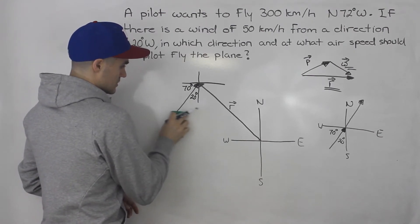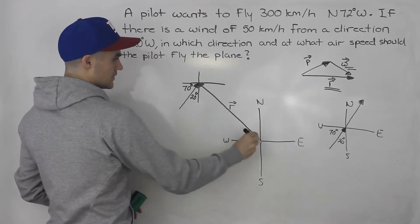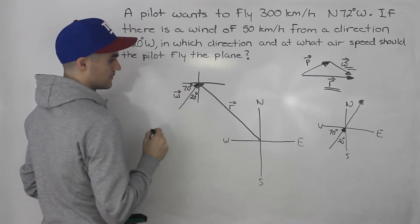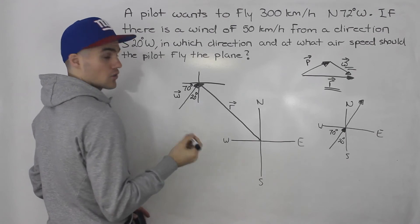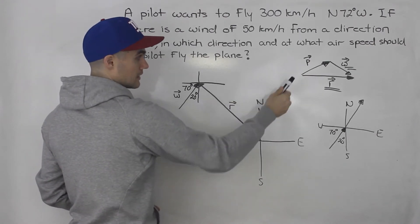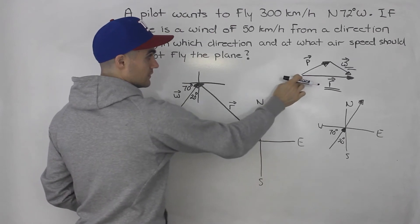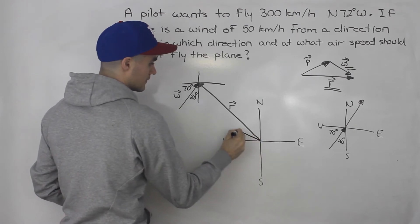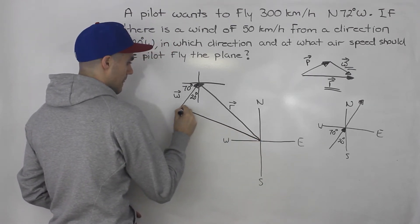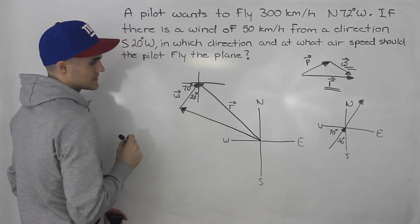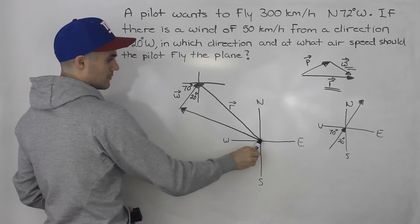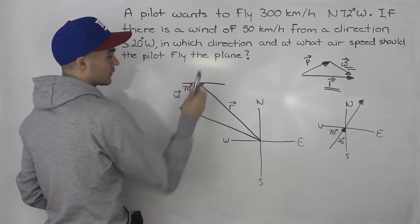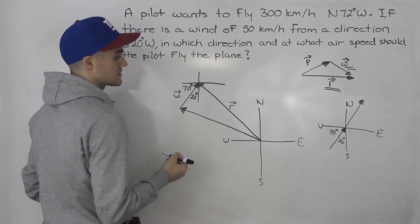So this here is the resultant, and then this vector here is the wind vector. Notice now that we can draw the plane vector — starting at the tail of the resultant and connecting to the tail of the wind, that would be the plane. So the plane goes this way, the wind is going to take it up a bit, and then it's going to end up flying 300 kilometers per hour north 72 degrees west.